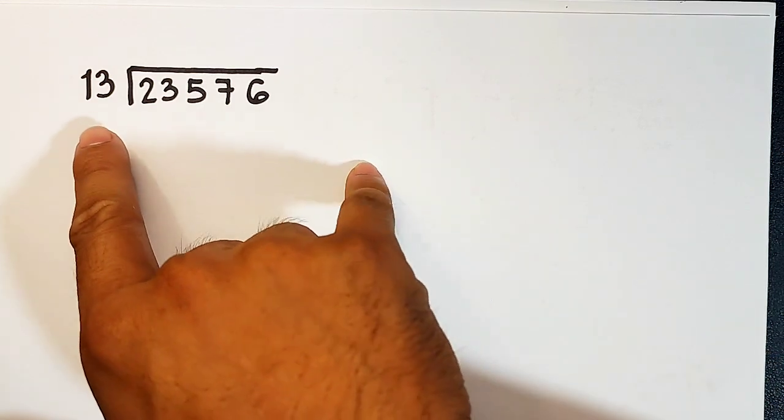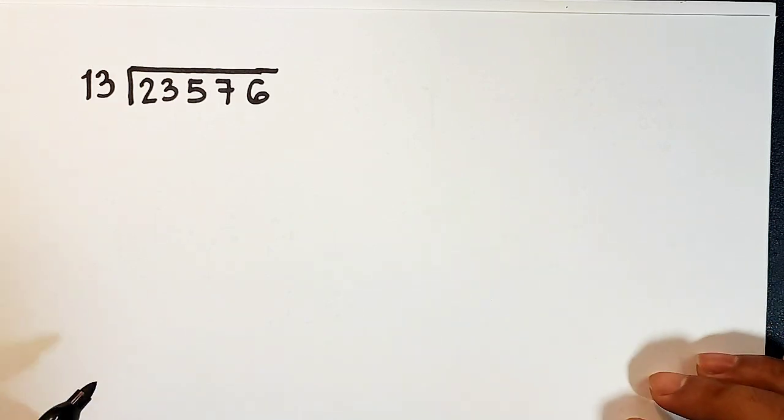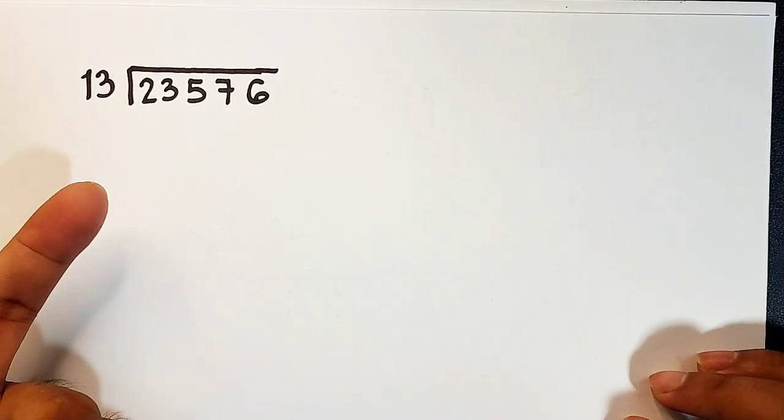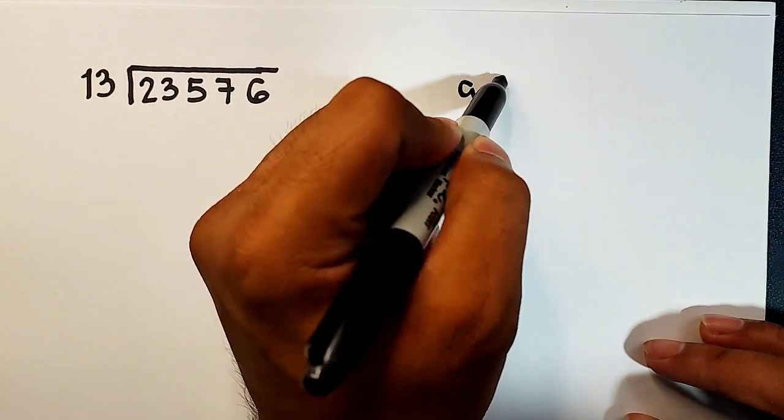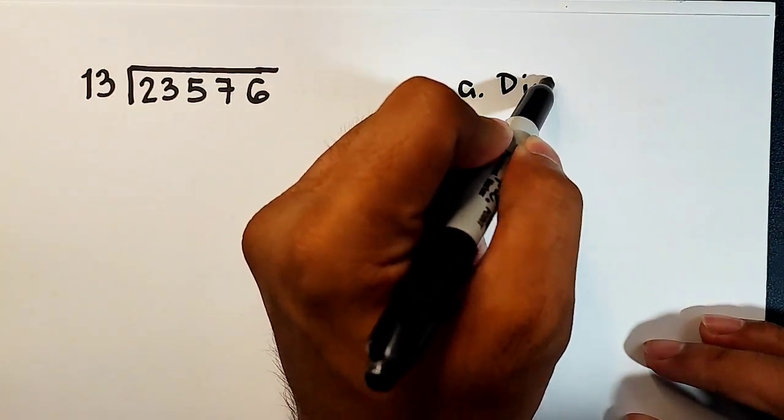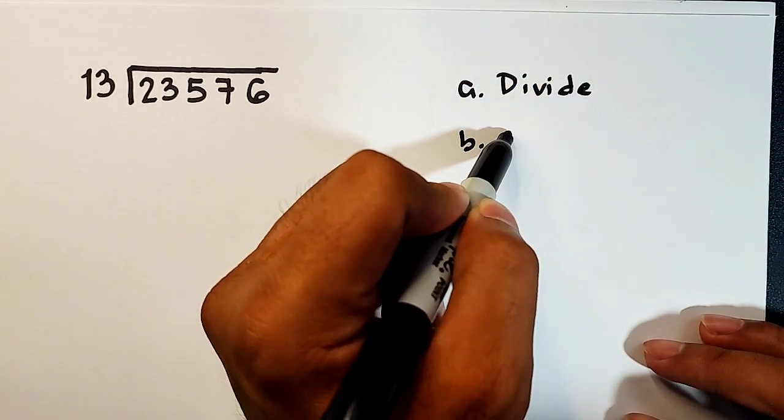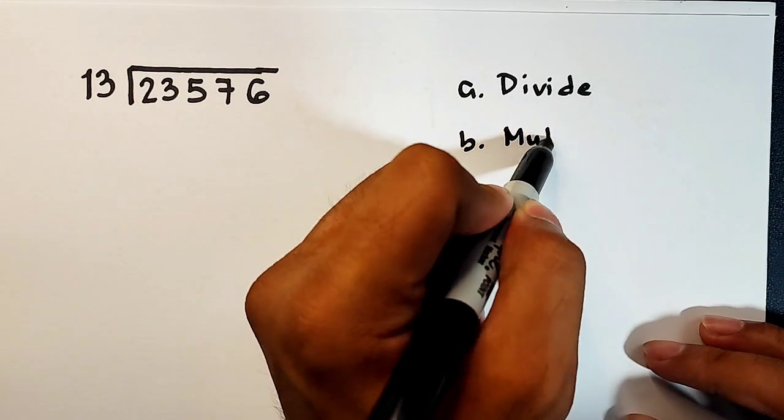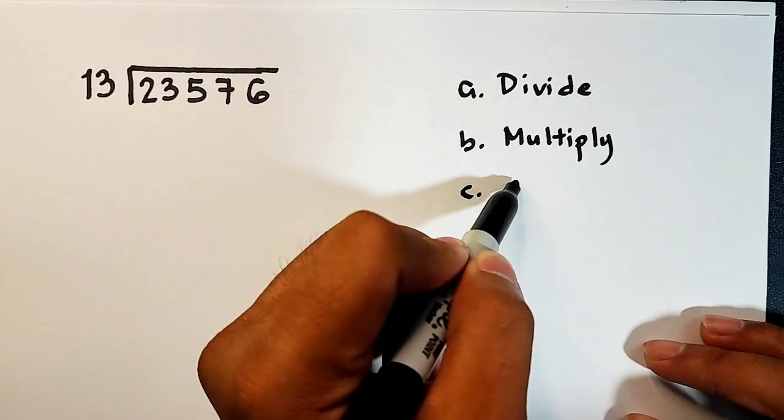Here, our divisor is 13 wherein it is a two-digit number. So remember guys, when you're dividing numbers, the steps are divide, second is multiply, and lastly, we will subtract.